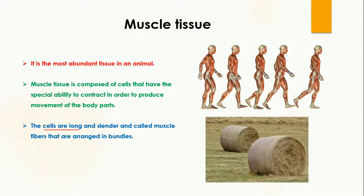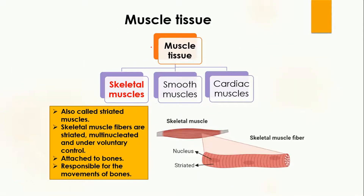The cells in the muscle tissues are actually long and cylindrical and they are called muscle fibers. The muscle fibers are arranged in bundles — similarly to hay bundles, the muscle fibers are arranged in the form of bundles. There are three types of muscle tissues: skeletal muscles, smooth muscles, and cardiac muscles.